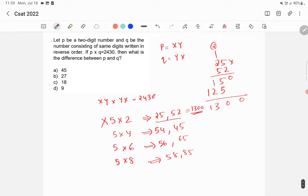Now 54 into 45. 54 into 45 is 2430. So the correct answer is it is 54 and 45.